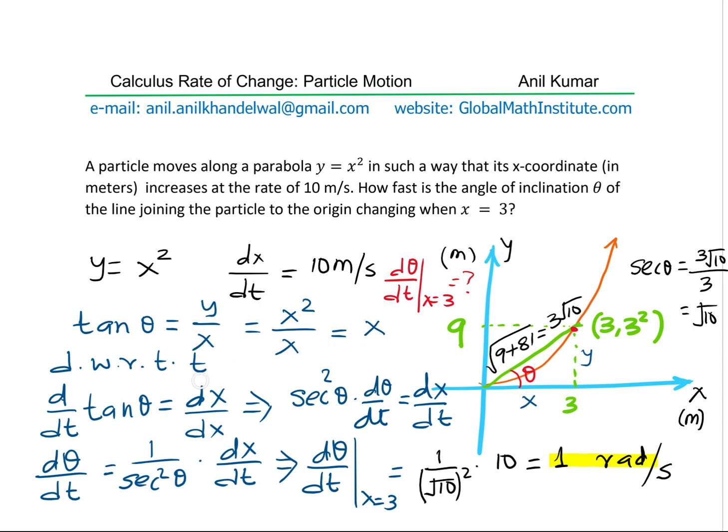Now, when you differentiate that with respect to time, you get secant square theta d theta dt equals dx dt. From here, you can always simplify and get the value of d theta dt. So I hope the steps are absolutely clear.